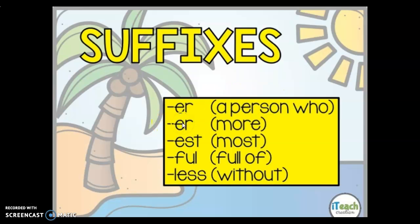The suffix '-er' could also mean 'more.' For example, if we have the root word 'fast' and we added '-er' to the end to get 'faster,' that would mean more fast — that person is more fast than someone else. Another example: if we added the suffix '-er' to the root word 'tall,' that would give us the word 'taller,' meaning more tall. He is taller than she is, which is why we use our suffixes.